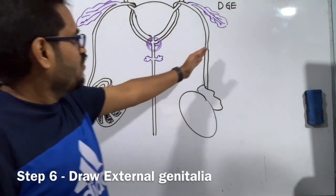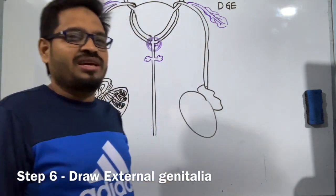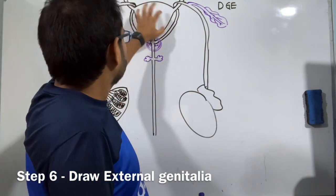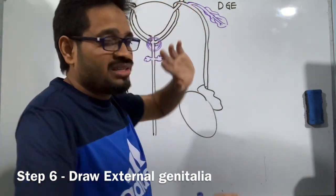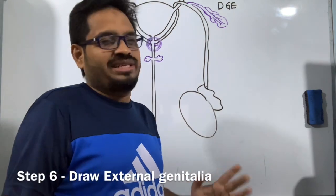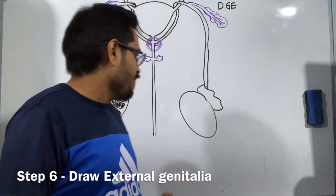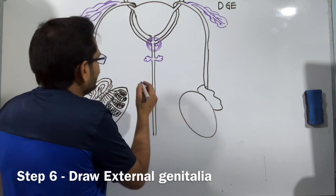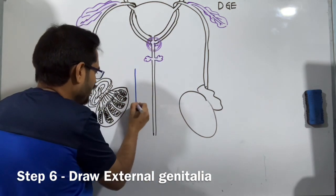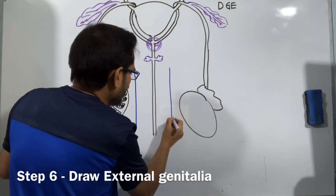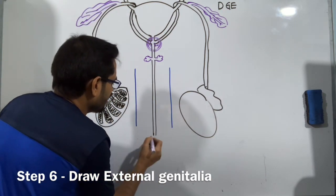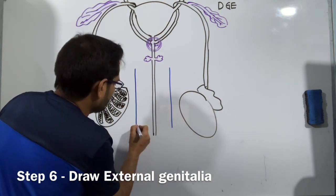Next we can go for heading E — external genitalia. That is actually the part which is visible from outside. All these glands, urinary bladder, everything is not visible from outside. External genitalia is the only part visible from outside — that's why it's called external genitalia. I'm using blue color for external genitalia. We just plan to draw the external genitalia with equal thickness on both sides.